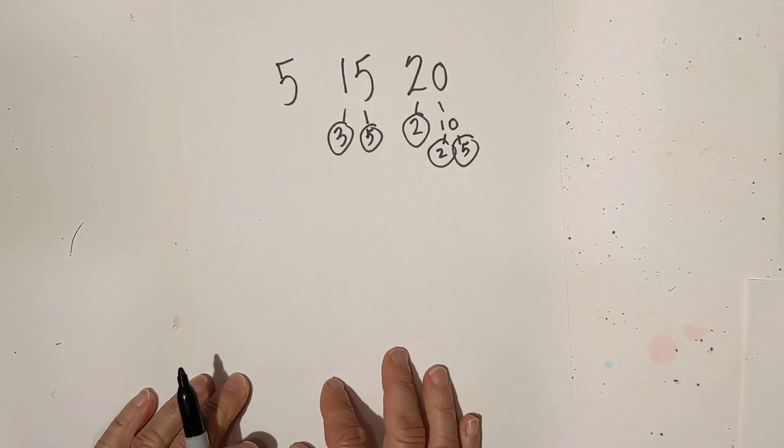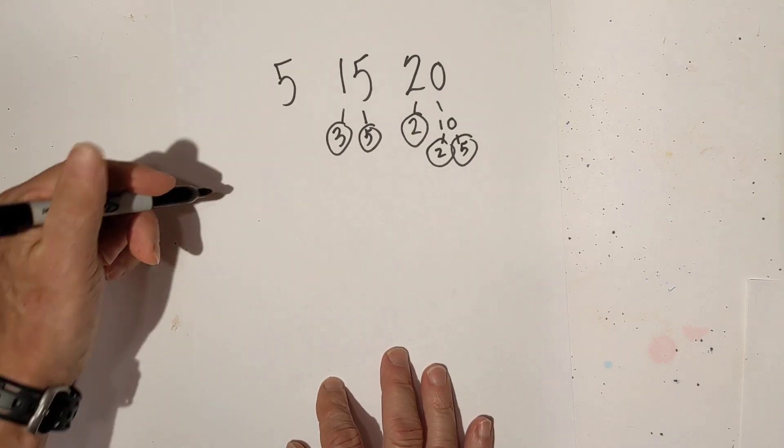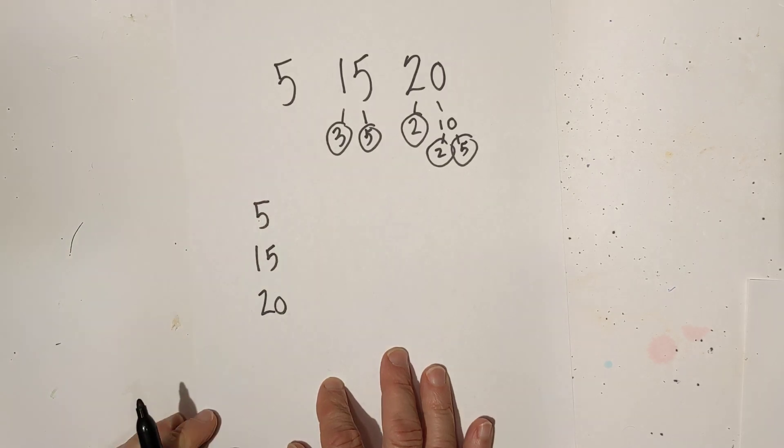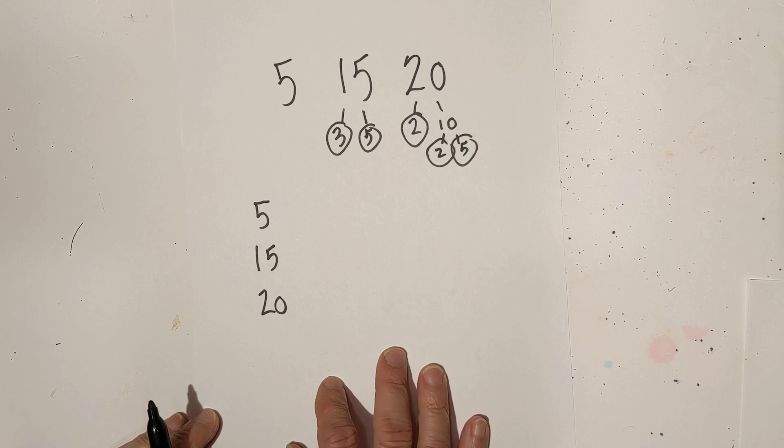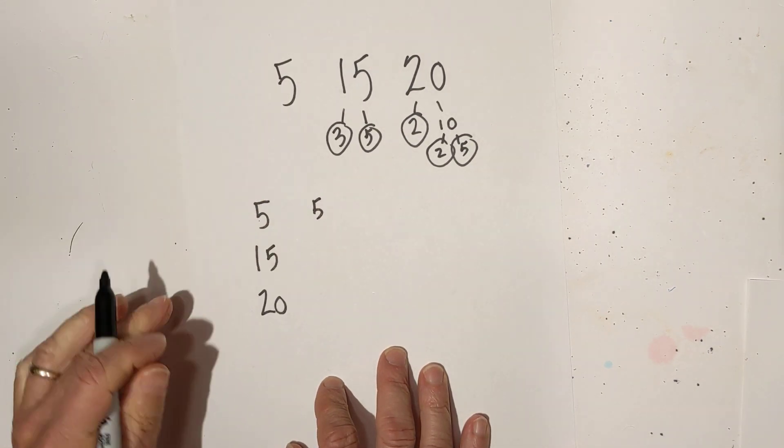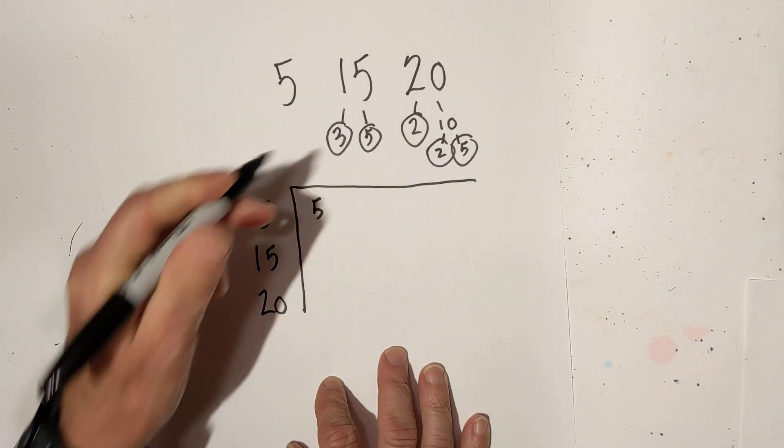I used to use another technique but I have just found this is the easiest thing if you are using prime factorization and that is to make a chart. Then all we do is we write the numbers in the chart. So for 5 we have 5, I will draw a chart like this.